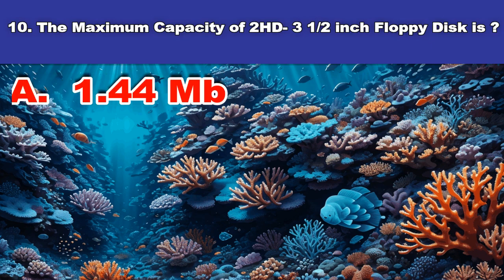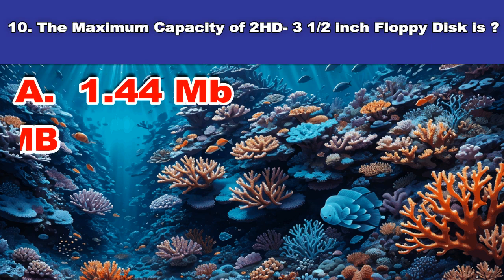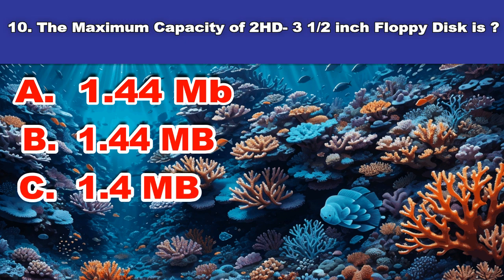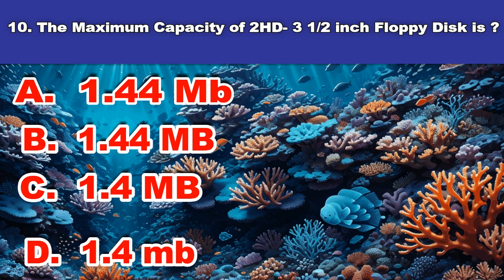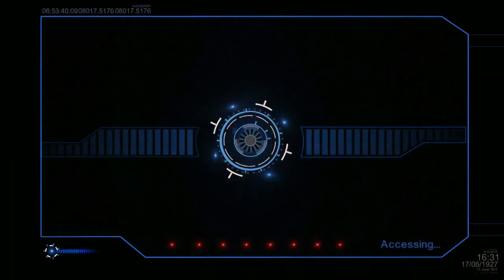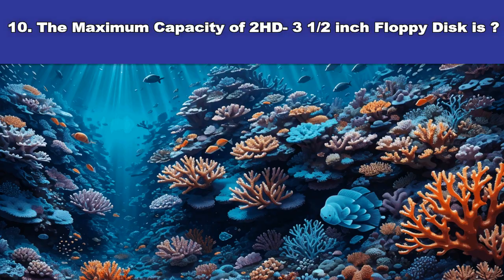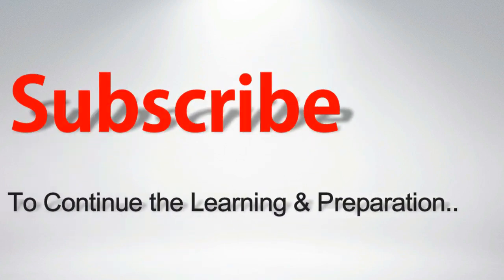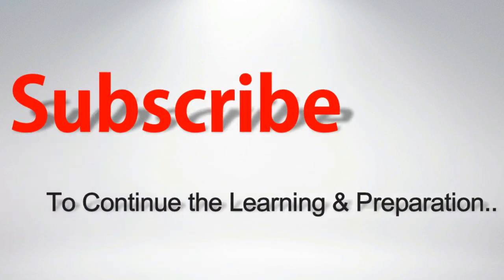Tenth question. The maximum capacity of a HD 3.5-inch floppy disk is? A. 1.44 megabits. B. 1.44 megabytes. C. 1.4 megabytes. D. 1.4 MB. And the answer is: 1.44 megabytes. To continue the learning and preparation.